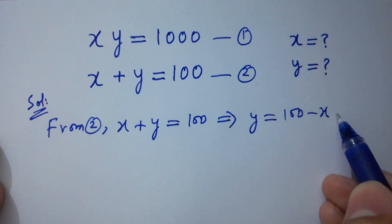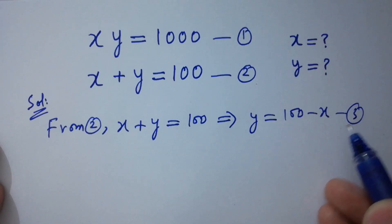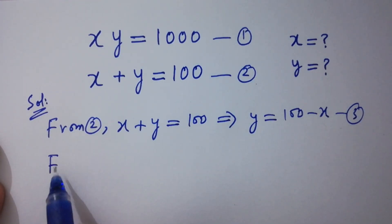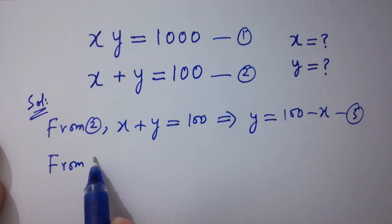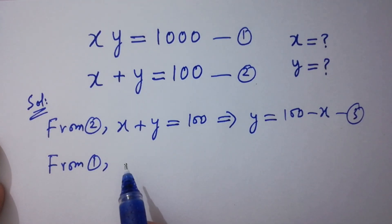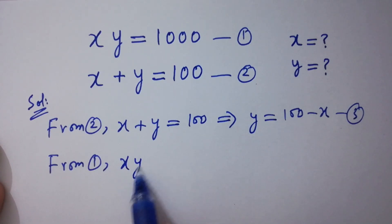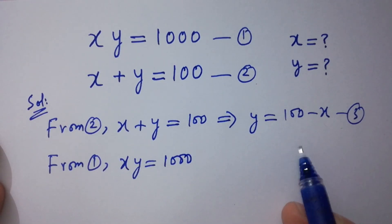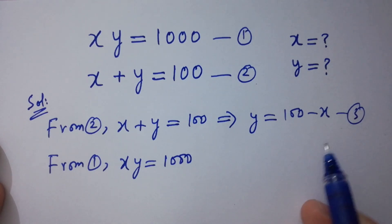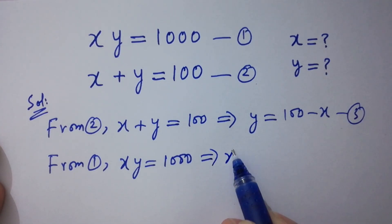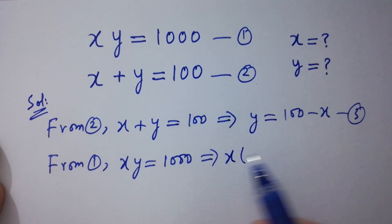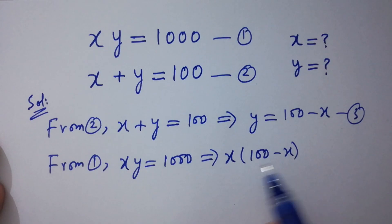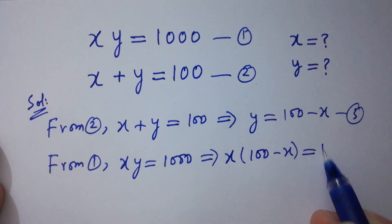Let this be the third equation. Now, from the first equation, xy equals 1000. Putting the value of y, we have x times (100 minus x) equals 1000.